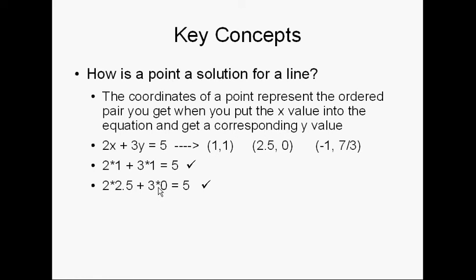2 times 2.5, that's 5. 3 times 0, 0. 5 plus 0 equals 5. Check. That is a solution to my problem, to this equation.